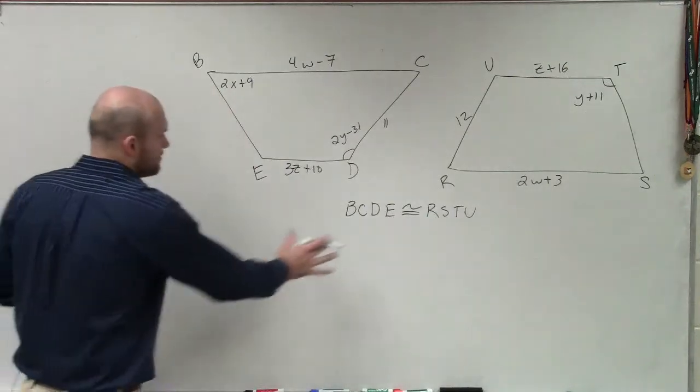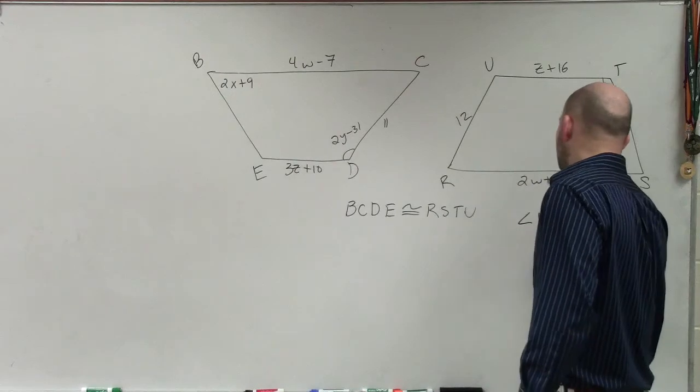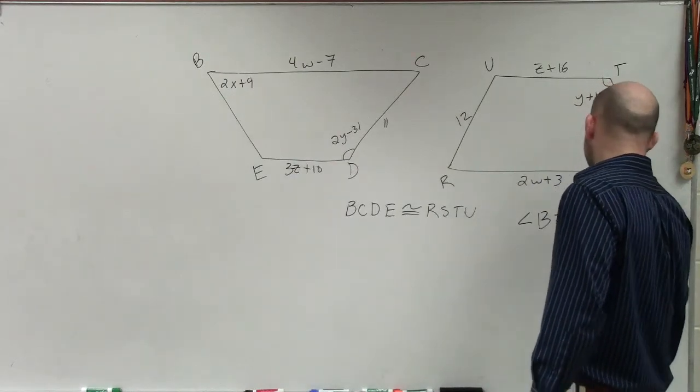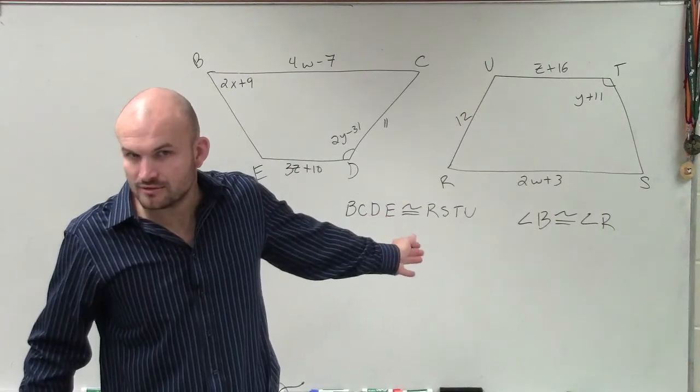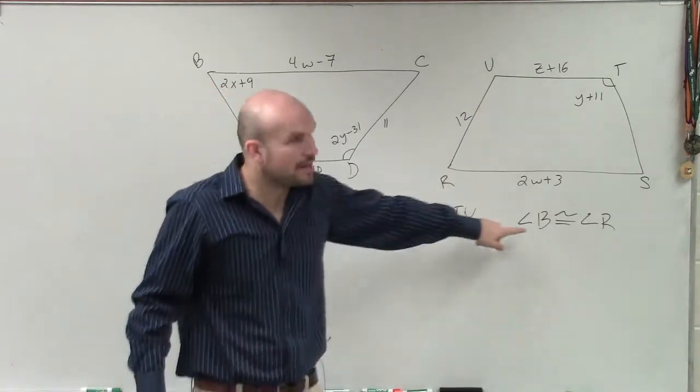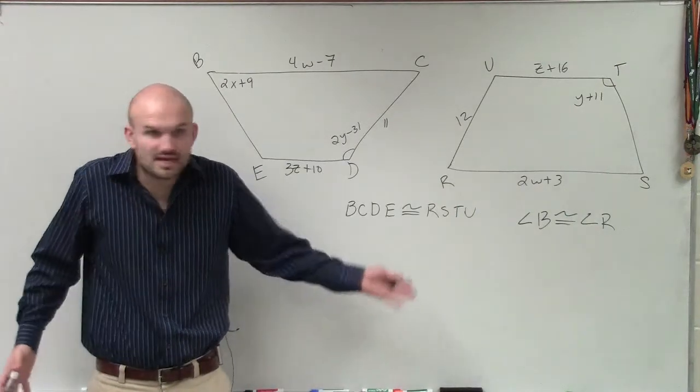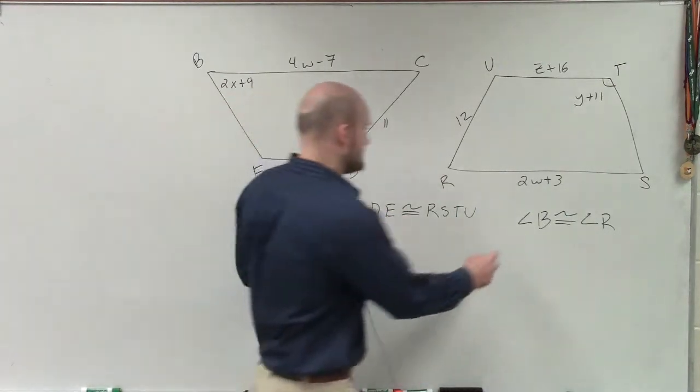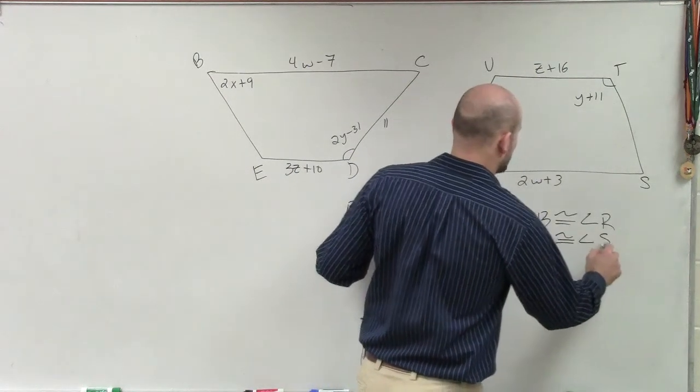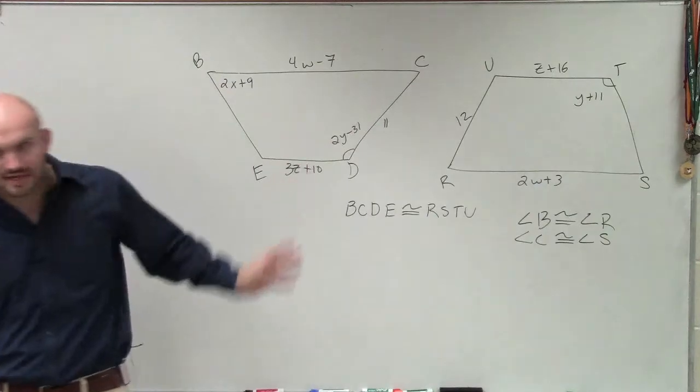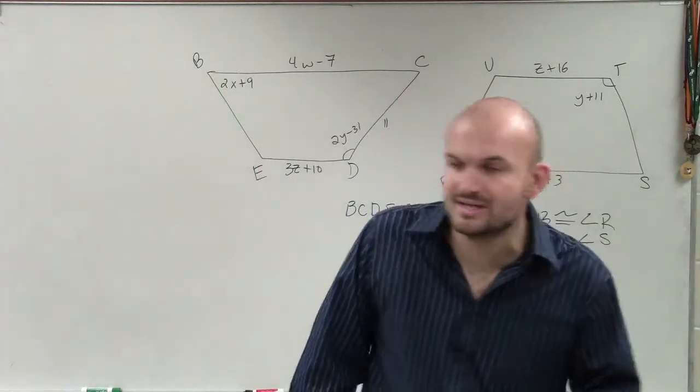So automatically, by looking at this statement, I can tell you my angles. I can say angle B is congruent to angle R. Forget about what it looks like in the picture. Forget about the picture. Does everybody understand why B is congruent to R? Because that's how we start our congruent statement. Then I could say angle C is congruent to angle S. I'm not even looking at the figure. Because the figure is going to sometimes get you confused.